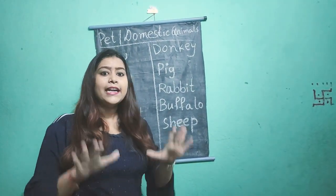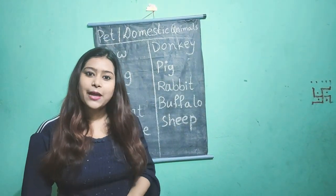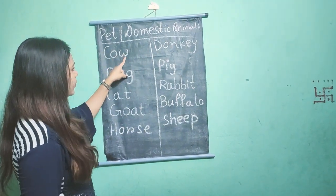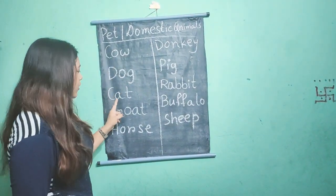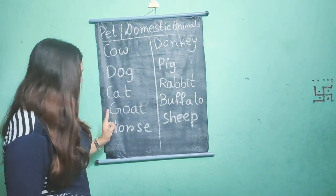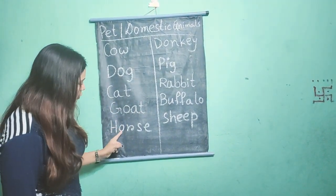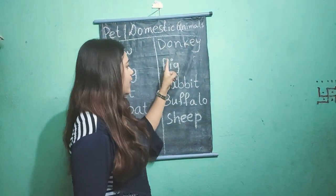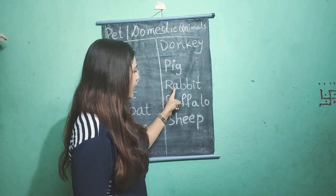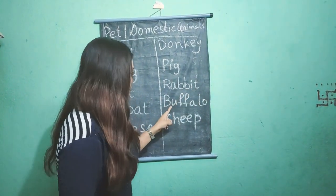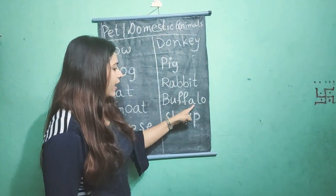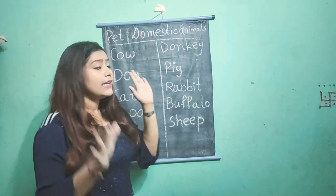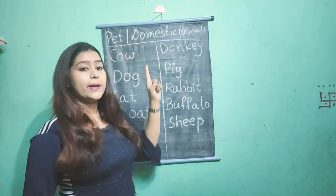Today also we will learn 10. Come and read it. C-O-W cow. D-O-G dog. C-A-T cat. G-O-A-T goat. H-O-R-S-E horse. D-O-N-K-E-Y donkey. P-I-G pig. R-A-B-B-I-T rabbit. B-U-F-F-A-L-O buffalo. S-H-E-E-P sheep. So these are the 10 pet or domestic animal names.